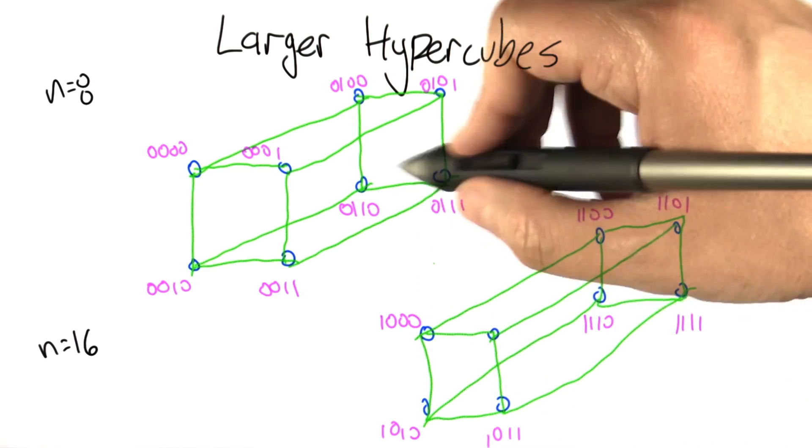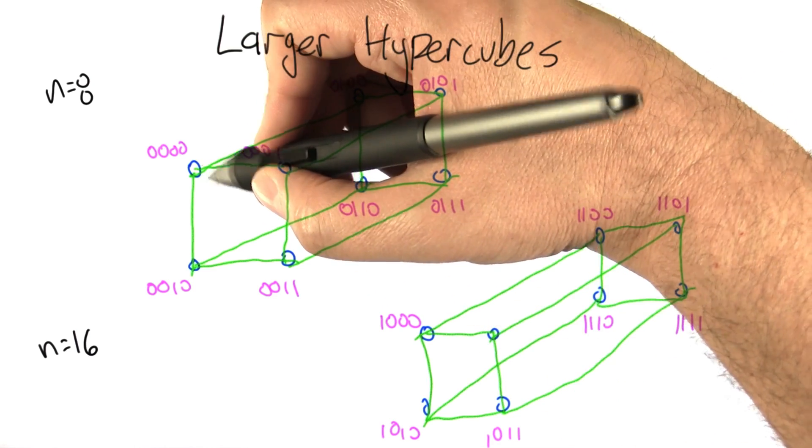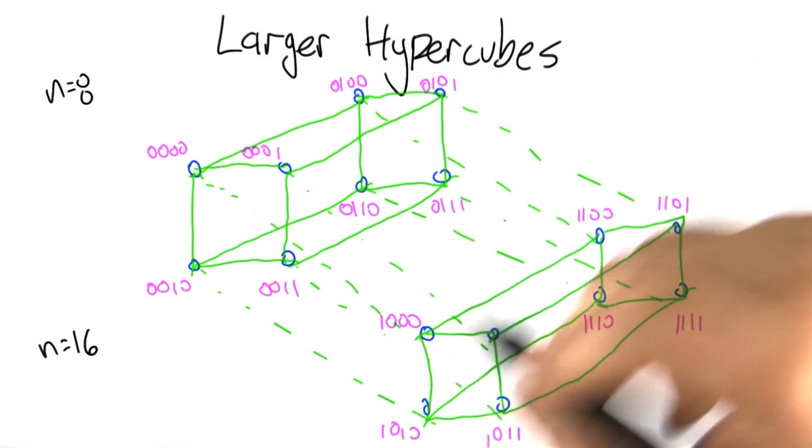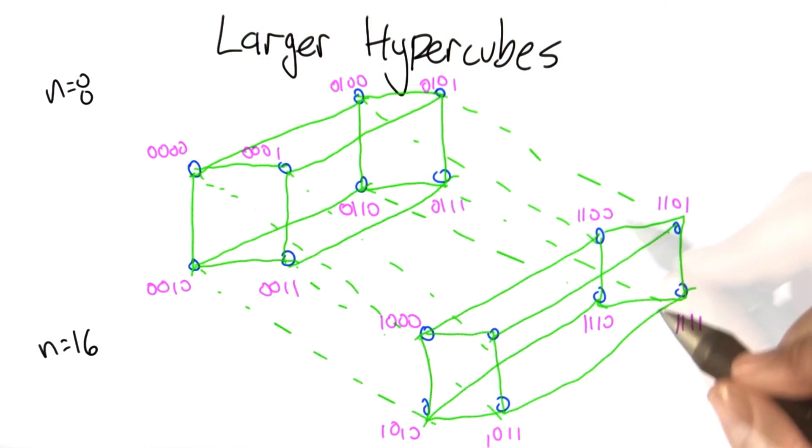Now if we connect the corresponding corners of these two cubes, which is going to be a little bit messy, and I can draw them deeper, but it'll start to make the picture a little distracting. That is a 4-dimensional cube, also known as a hypercube.